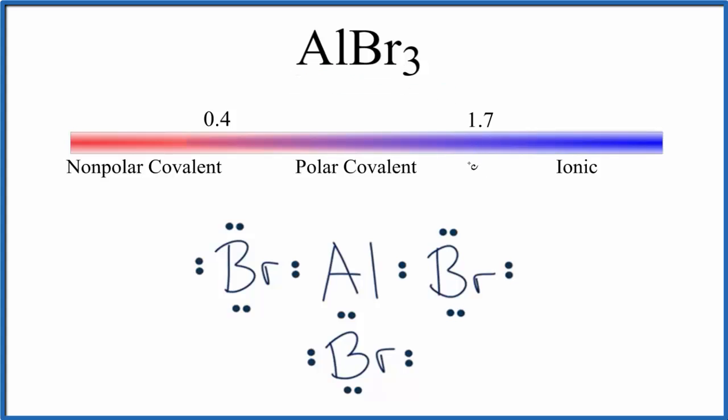The first thing we can do is look at the electronegativity difference between the aluminum and the bromine. We're looking at the electronegativity difference between each of these bonds here.